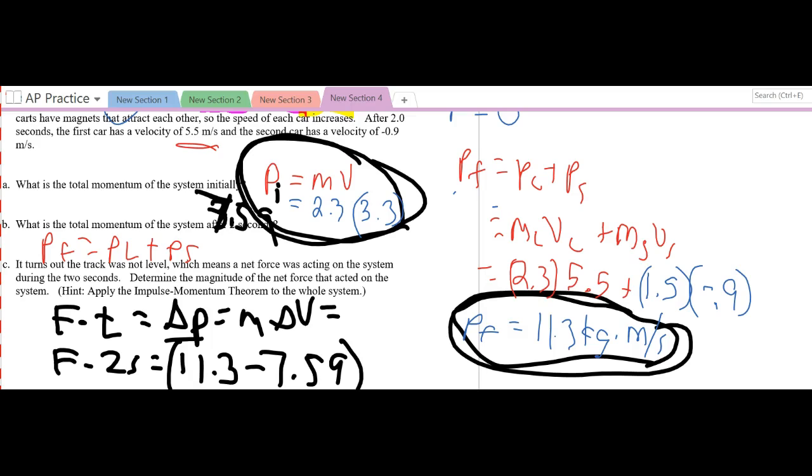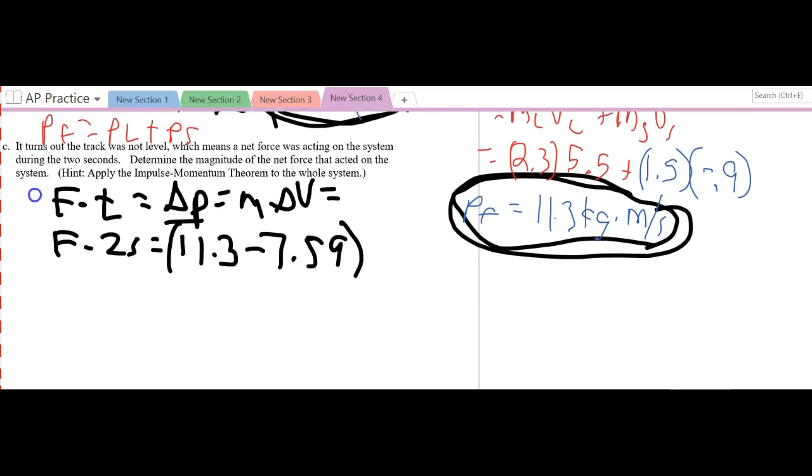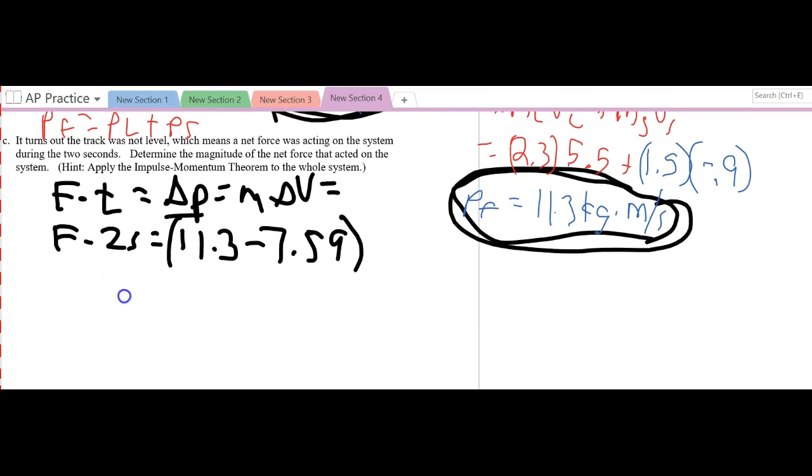We can plug that in, and I have 11.3 minus 7.59 divided by 2, and I end up with a change in momentum of 7.5, so let's see, F equals 7.51 Newtons, if I had to solve it.